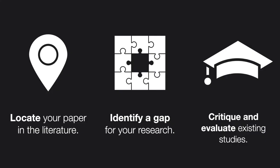Whichever approach you take, it's important to remember the three core functions of a lit review: locating your research, identifying a gap, and critiquing and evaluating the literature. If you ever want to see an example of a literature review, the best place to look is in one of the articles that you've found. Nearly every academic paper, especially those that report on empirical research, will have a section dedicated to covering the literature. So there you go — Lit Reviews 101.